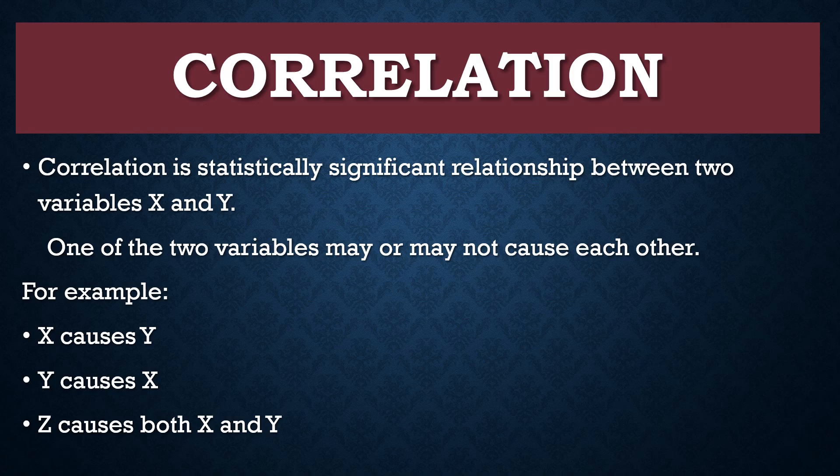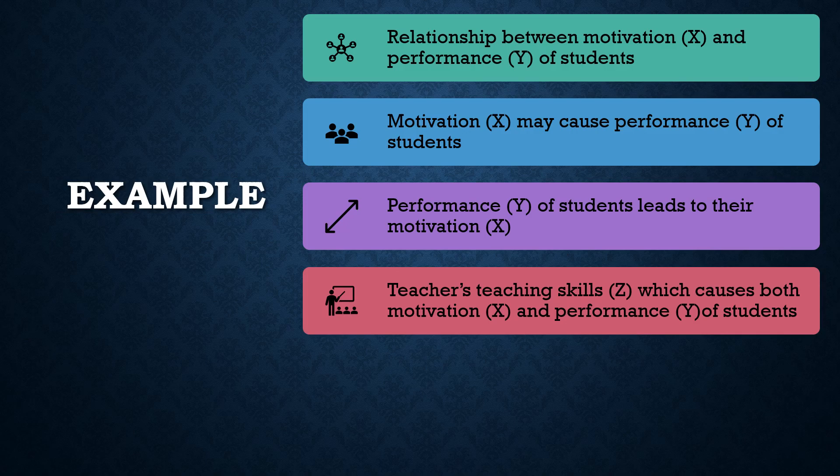For example, the first case is X causes Y. A second case may be Y causes X. But there can be a third case: that there is a third variable Z which causes both X and Y. For example, consider the relationship between motivation and performance of students.